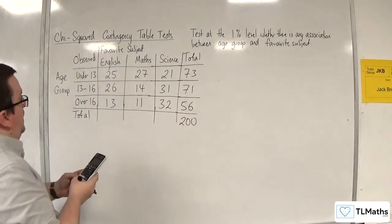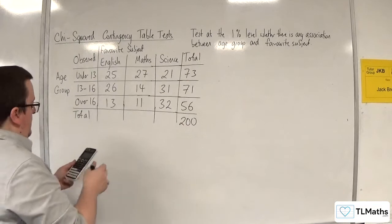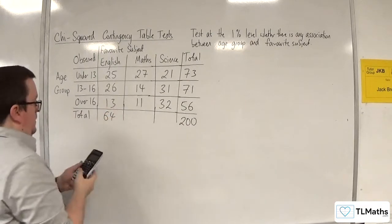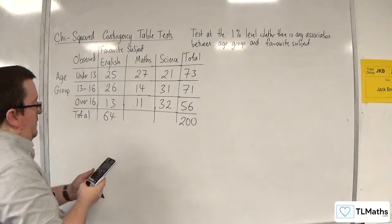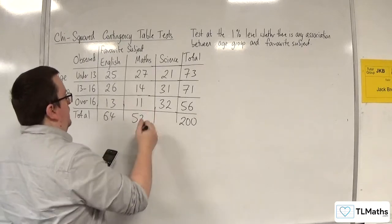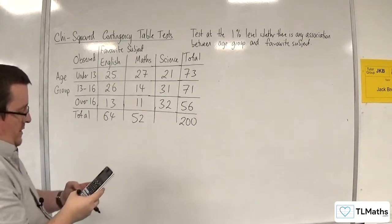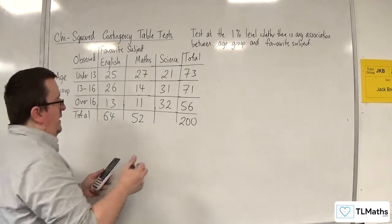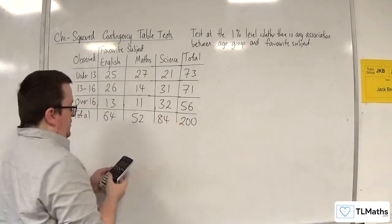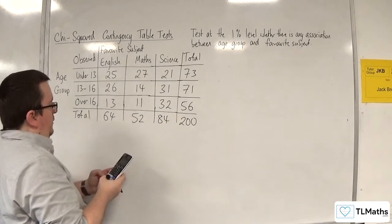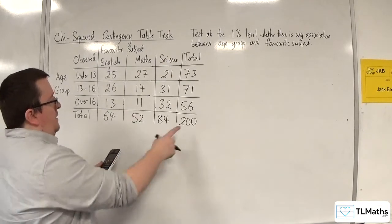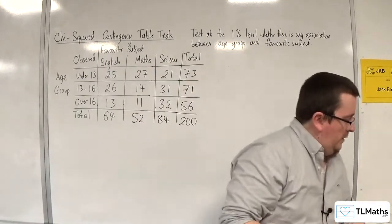We've got 25 plus 26 plus 13 is 64. 27 plus 14 plus 11 is 52. 21 plus 31 plus 32 is 84. And just do a quick check, adding those three together to get you 200. Yep, all good.